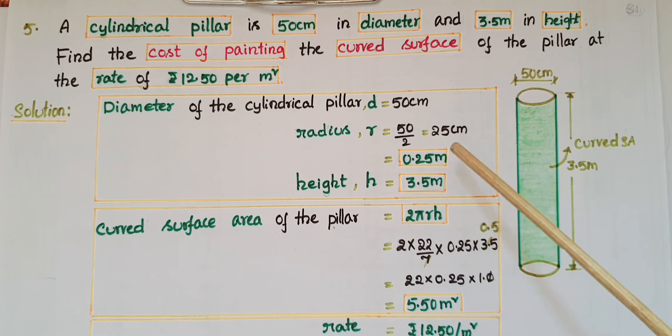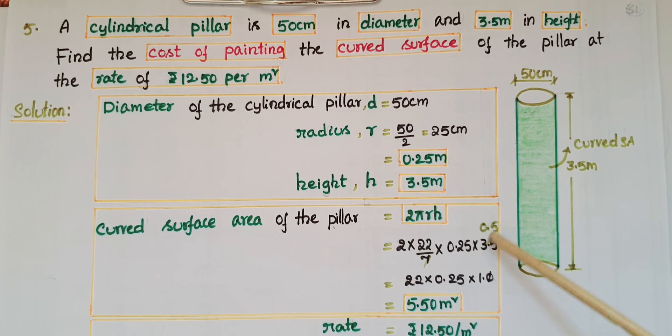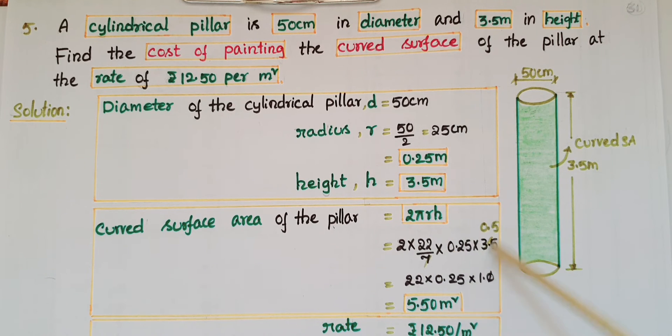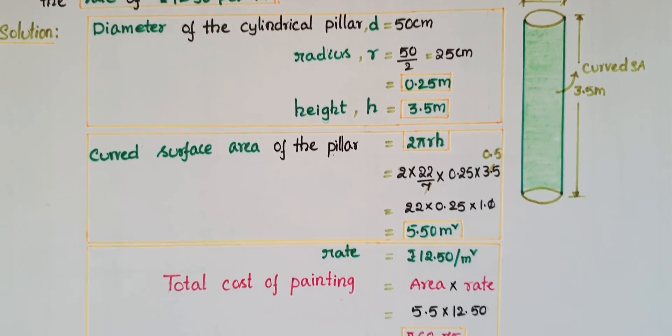That equals 7, so 3.5 times 2 equals 7. Then 22 into 0.25: 2 times 0.5 is 1, 2 fives are 10, and placing the decimal gives us 1.0. So 22 into 0.25 equals 5.5 meter square. The rate is given as 12.50 rupees per meter square.